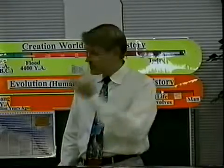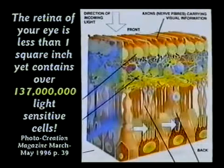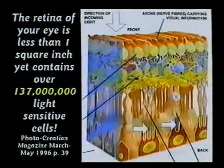The Bible says very clearly God formed the eye — Psalm 94. God ought to get the glory. Did you know that on the back of your eyeball is the retina, which receives the light? That retina has 137 million light-sensitive cells in one square inch. How would you like to be the electrician to wire up 137 million connections in one square inch?